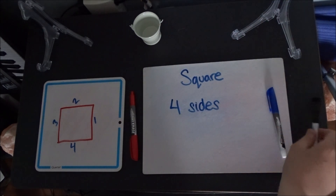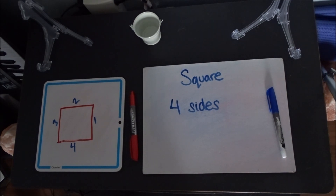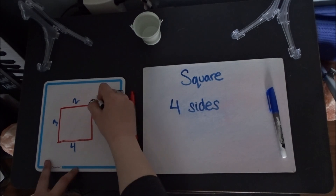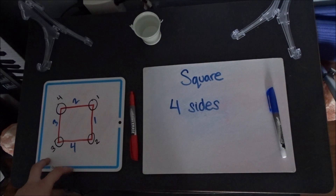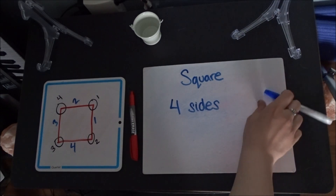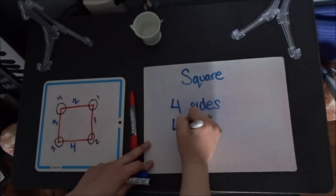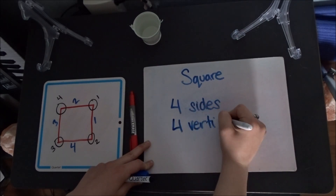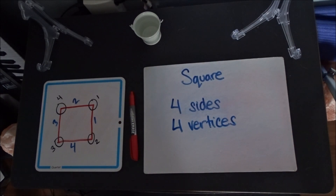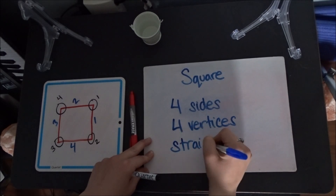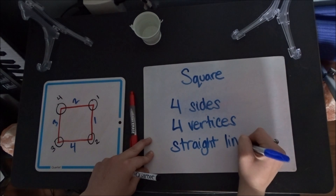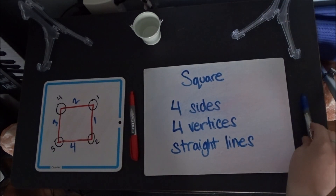How many vertices does our square have — how many spots where those lines connect? One, two, three, and four. So our square has four vertices. And are we using straight lines or curved lines? Straight lines! Great job!